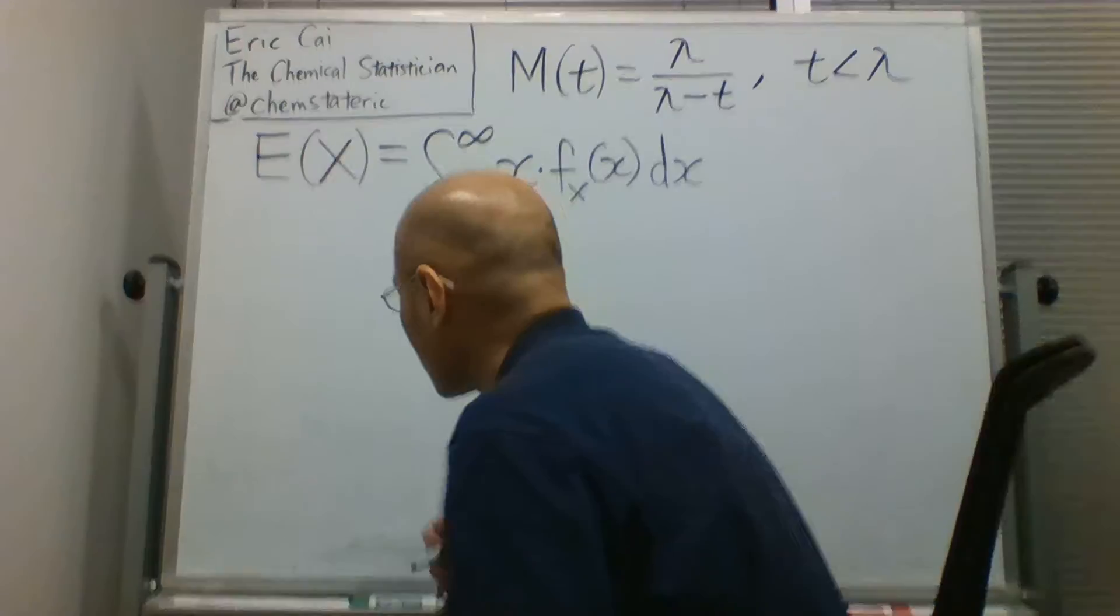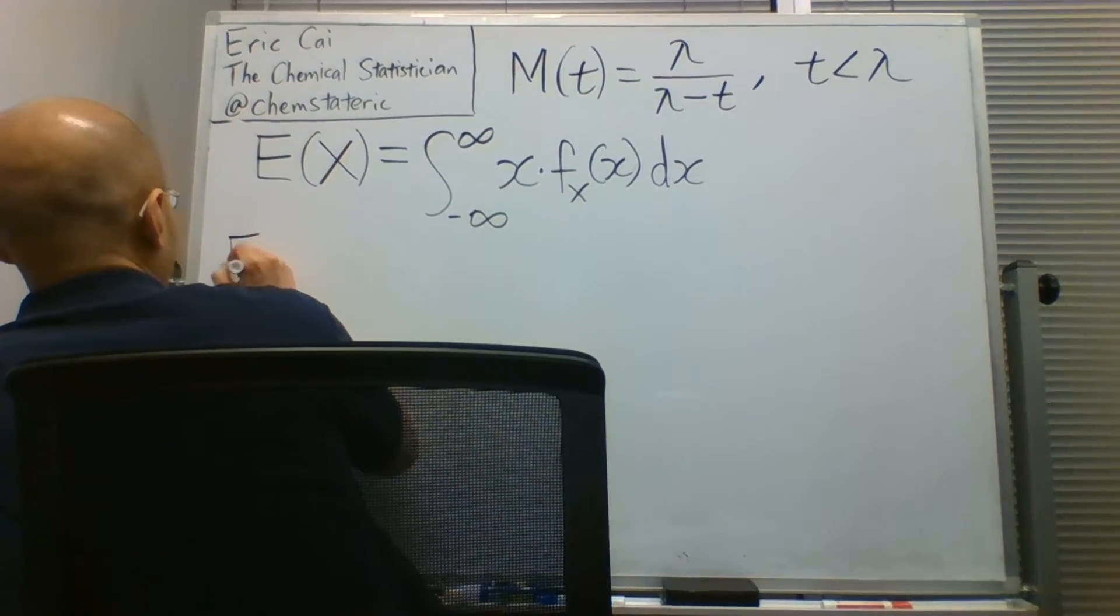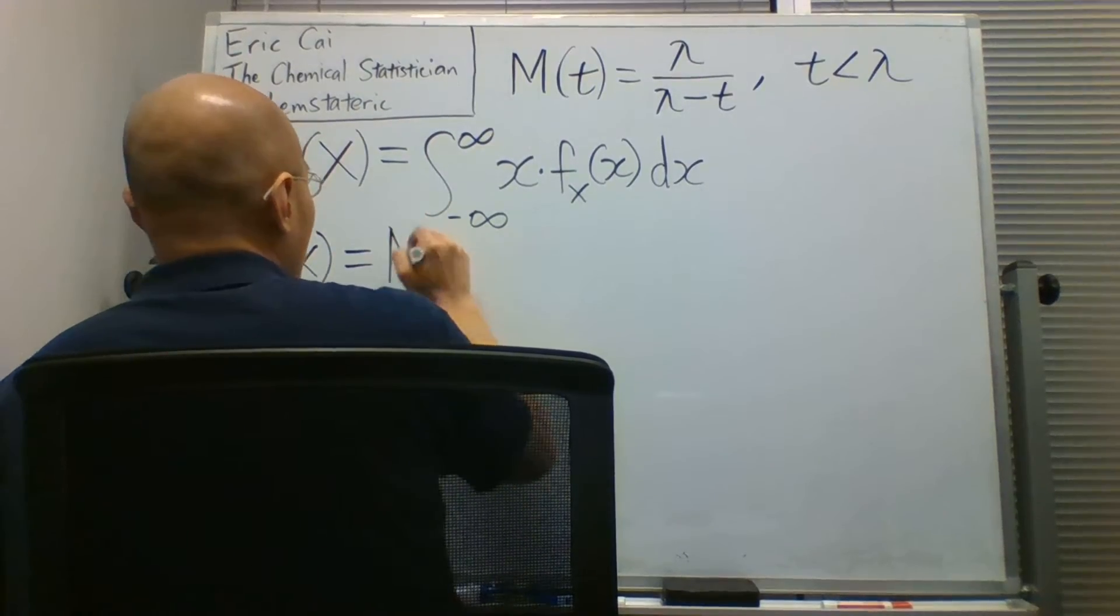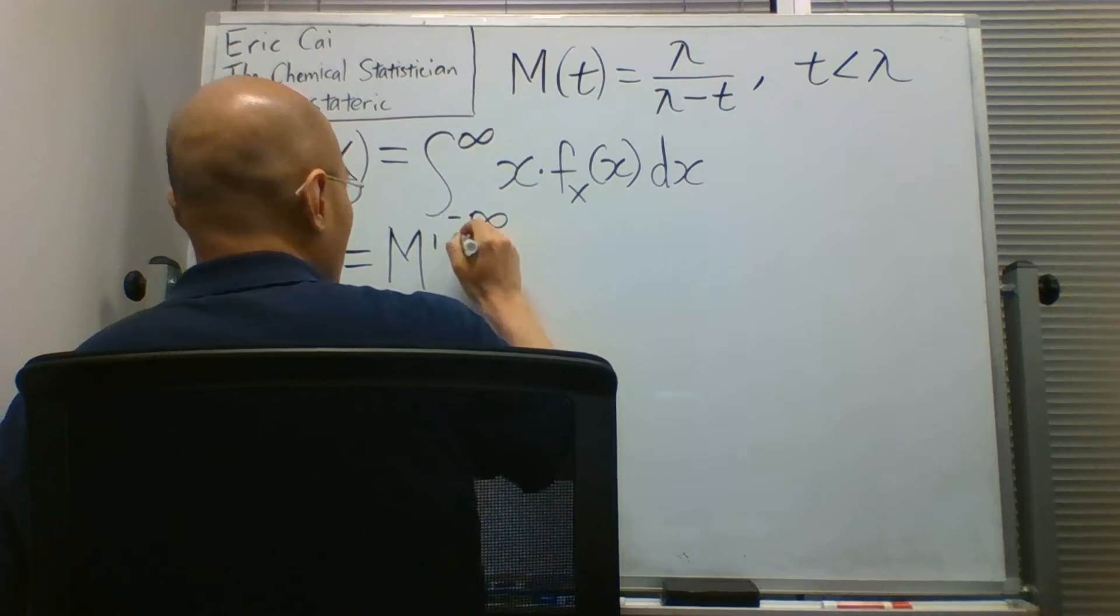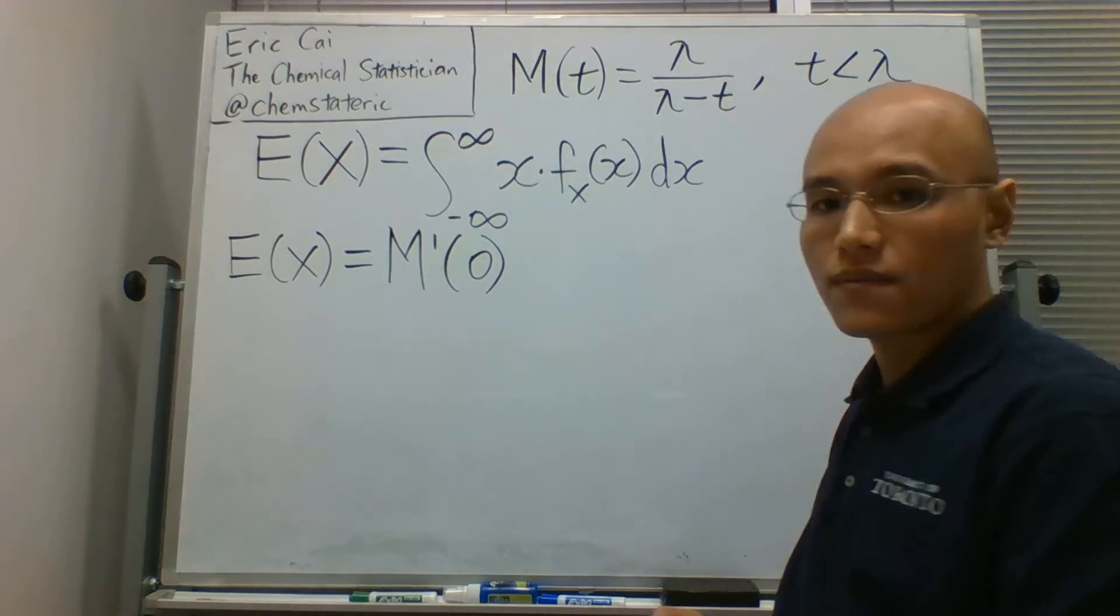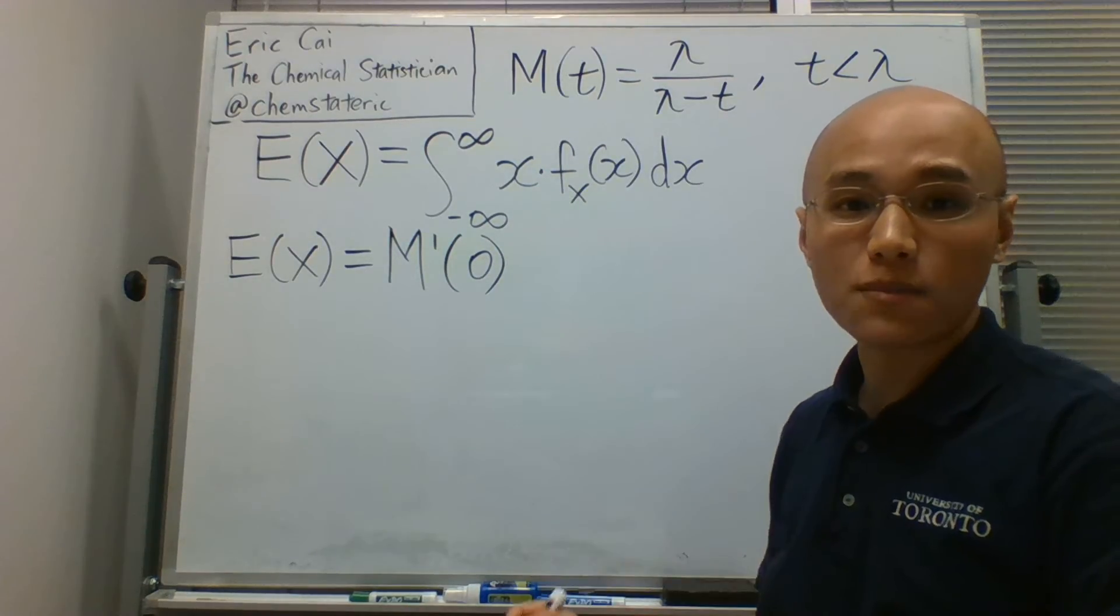Remember that the expected value is equal to the derivative of the moment generating function evaluated at zero. So let's do this for the exponential distribution.